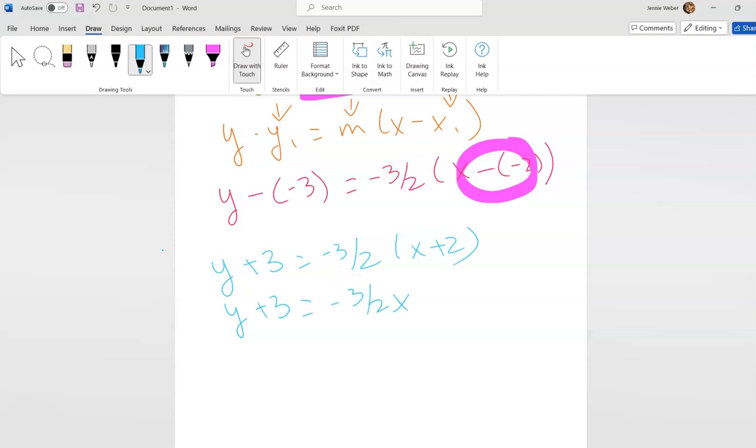So I'm going to distribute. This can become negative 3 because when I distribute - this is over 1, those cancel - and then I would subtract 3 from both sides to get y equals negative 3 halves x minus 6.